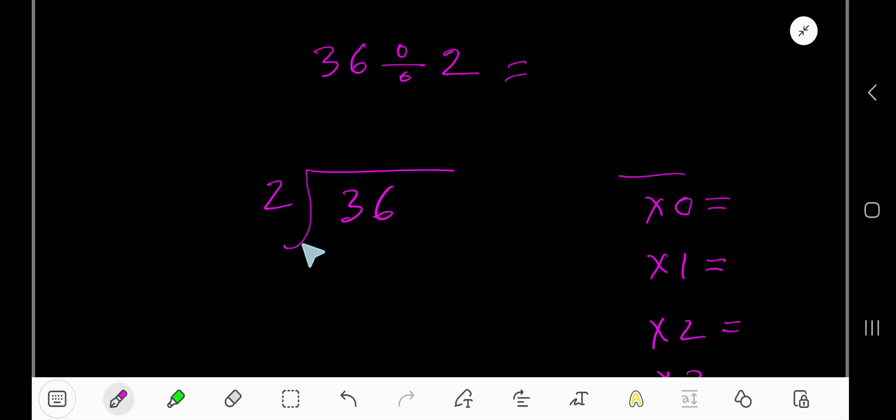36 divided by 2 equals what? 2 goes into 3 how many times? Let me give you the multiplication table of 2. 2 times 0 equals 0. 2 times 1, just add 2 with the previous step, equals 2.